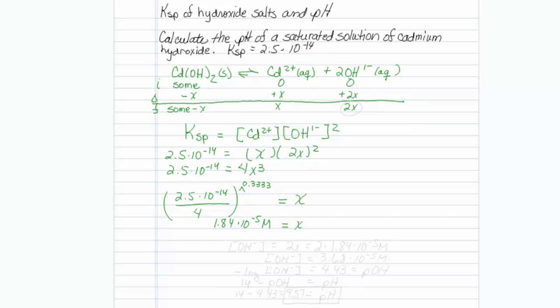But remember that my hydroxide concentration I represented as 2x. So my hydroxide concentration is 2 times 1.84 times 10 to the minus 5th molar, which is equal to 3.68 times 10 to the minus 5th molar.